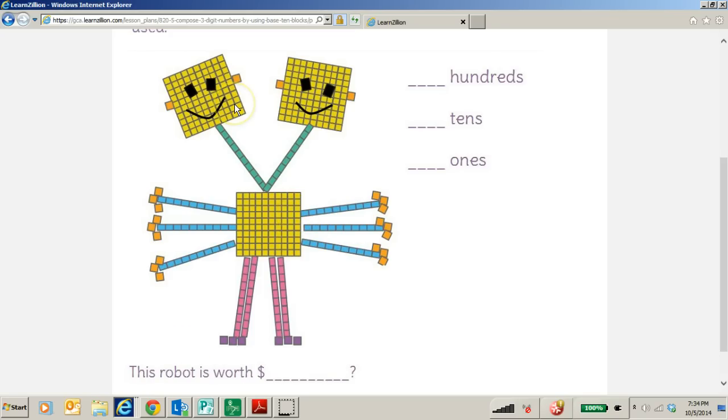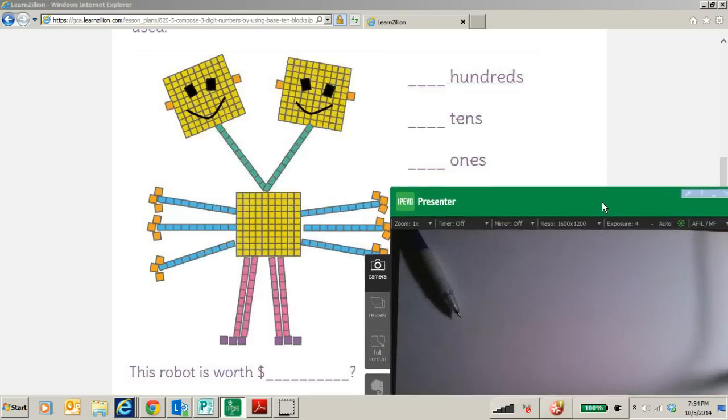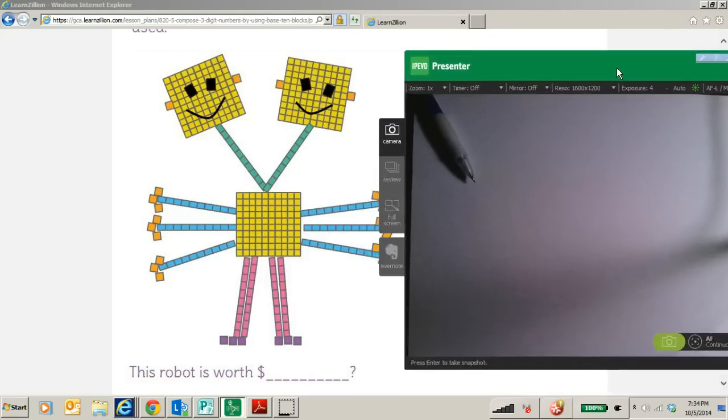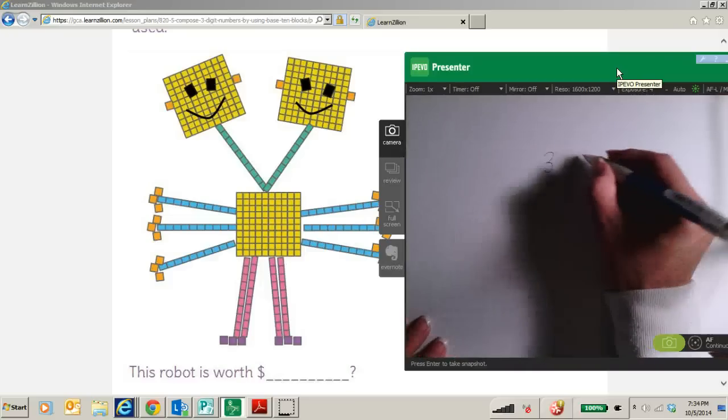If we count the number of 100s, I am going to get my document camera and do this with you. So if we count the number of 100s, I can see that I have, let's move it over here, we have three groups of 100.